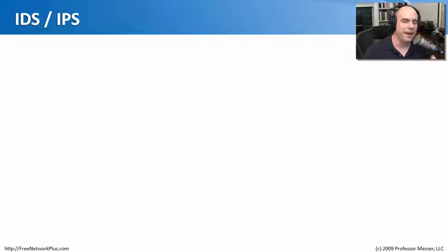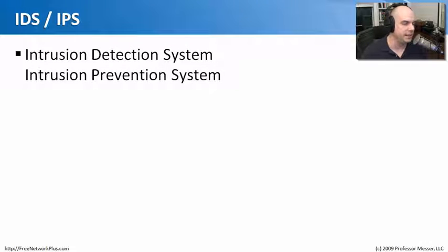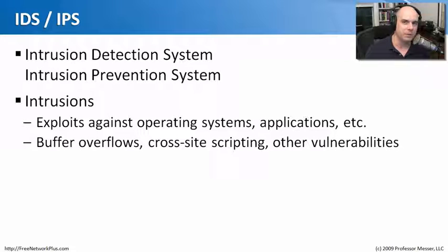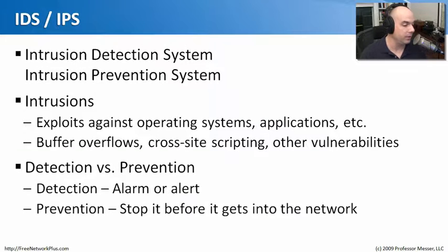Along with firewalls, we may need to see what's going in and out of our network from a vulnerability perspective. An IDS/IPS — Intrusion Detection System and Intrusion Prevention System — are devices that look for intrusions: things that would be bad for our systems, like buffer overflows, exploits against our operating system, things that could cause our devices to be completely under the control of an attacker.